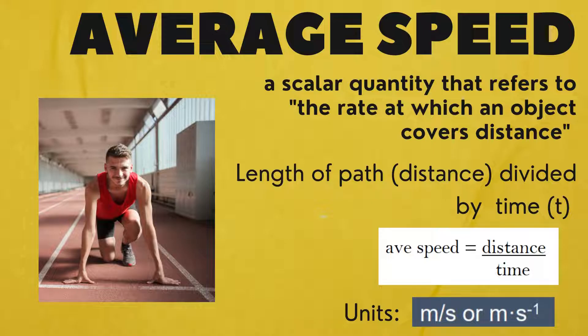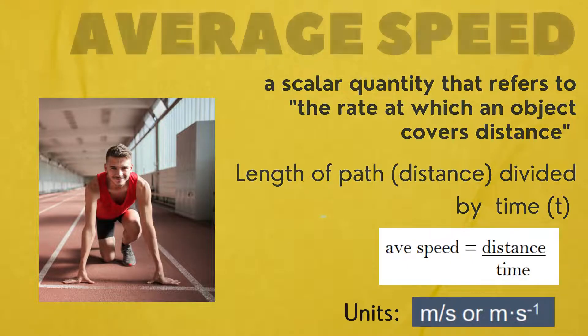Average speed is a scalar quantity that refers to the rate at which an object covers a distance. To compute the value of average speed, we will use the formula length of path, that is the distance divided by time. The unit for the average speed is equal to meter per second.